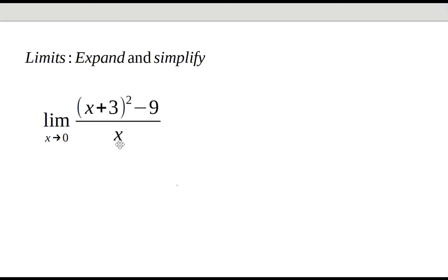So we would have to manipulate the function because we're looking for a finite solution. What I would do here is to expand the function and simplify it. So I have the limit as x approaches zero. If we expand this function we have x squared plus 6x plus 9.